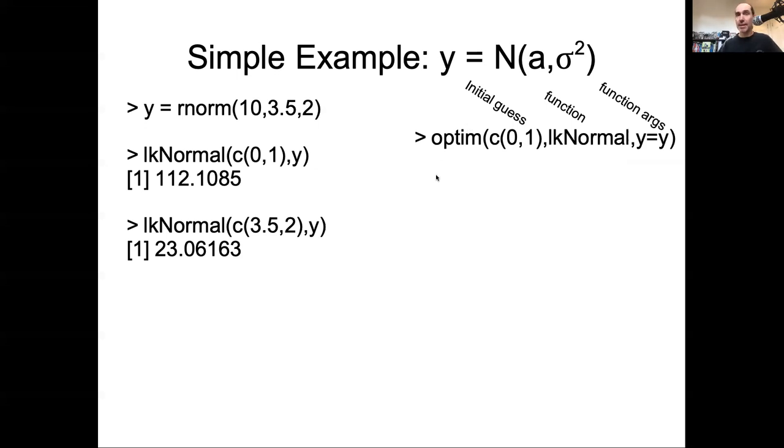So what happens when you call this optim function? You're going to get a bunch of stuff back. You're going to get a list of things back so you can access them by name for the different parts. The first part you get is called par, and par is your best estimate of the parameters. So here it came back as the best estimate of the mean was 3.8977, so about 3.9, and then a standard deviation of 2.32. That's not exactly 3.5 and 2, but that's not because the algorithm didn't work. It's actually because this is just a sample size of 10, and so the actual sample mean here and sample standard deviation are essentially the same as what you got back from optim.